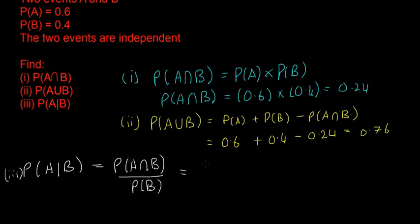P of A intersect B is 0.24 divided by the probability of B, which is 0.4, and that gives us an answer of 0.6.